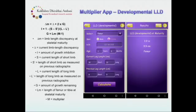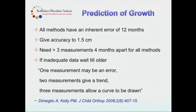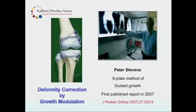All predictions of growth have an inherent error of at least 12 months and give an accuracy of 1.5 centimeters. However advanced your technology, these are the figures you will get. You should not take a single measurement and make a prediction — you need at least three measurements, ideally every four months. Dimeglio's statement is powerful: one measurement is usually an error, two measurements give a trend, and three measurements allow a curve to be drawn. Unless you have those three serial measurements, you should not be predicting growth at skeletal maturity.